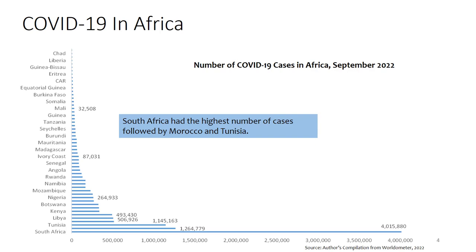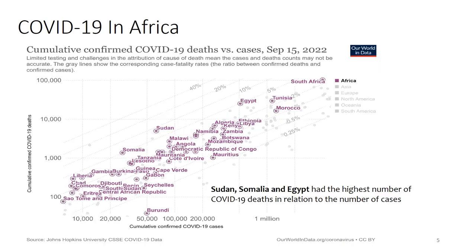Within the African region, South Africa had the highest number of cases, followed by Morocco and Tunisia. South Africa had around 4 million cases of COVID-19 up to September 2022. Looking at death versus number of cases, data from Our World in Data shows that Sudan, Somalia, and Egypt had the highest death-to-case ratios. Sudan had around 10 percent COVID-19 deaths in relation to the number of cases, whereas Somalia and Egypt were around five percent.